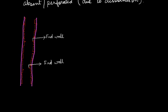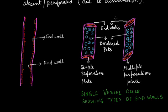If we draw a single xylem vessel cell, vessel cells can be of two types based on the end walls they possess. They can have a simple perforation plate, in which only a single perforation is present, or a multiple perforation plate containing multiple perforations or pores in their end walls. These dissolved end walls help form a continuous chain for conduction.